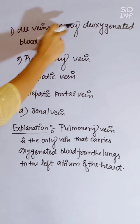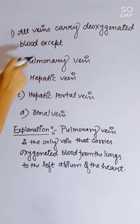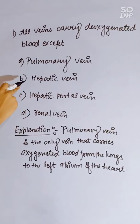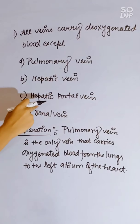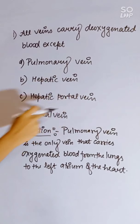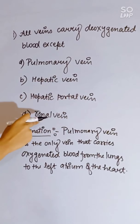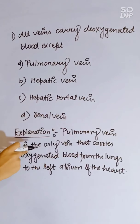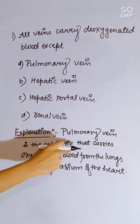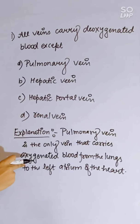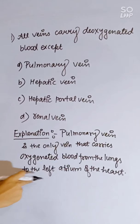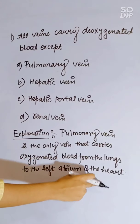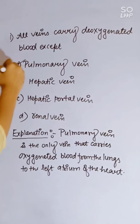Veins carry deoxygenated blood except: pulmonary vein, hepatic vein, hepatic portal vein, or renal vein. The pulmonary vein is the only vein that carries oxygenated blood from the lungs to the left atrium of the heart. Correct answer is A.